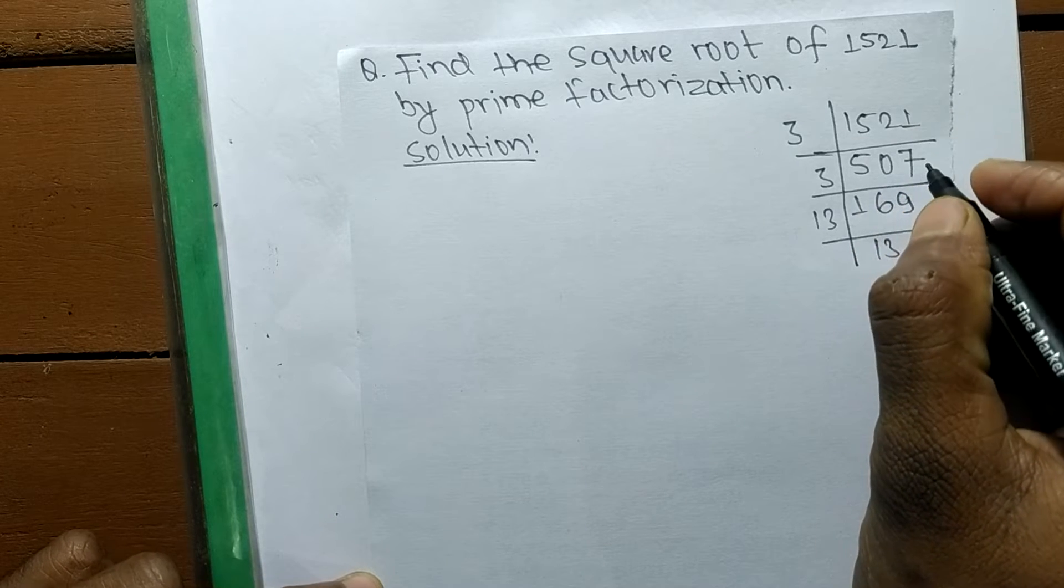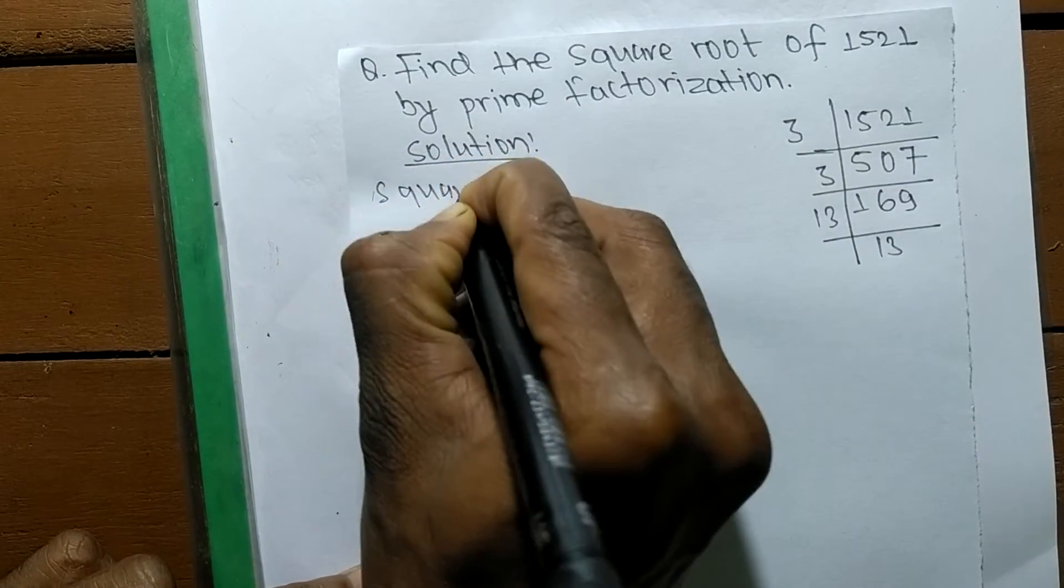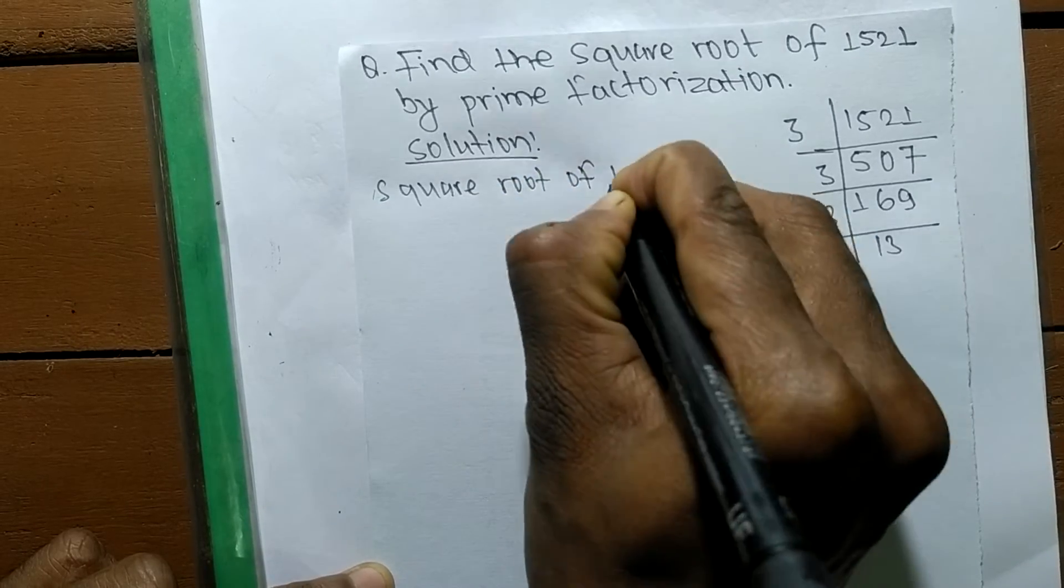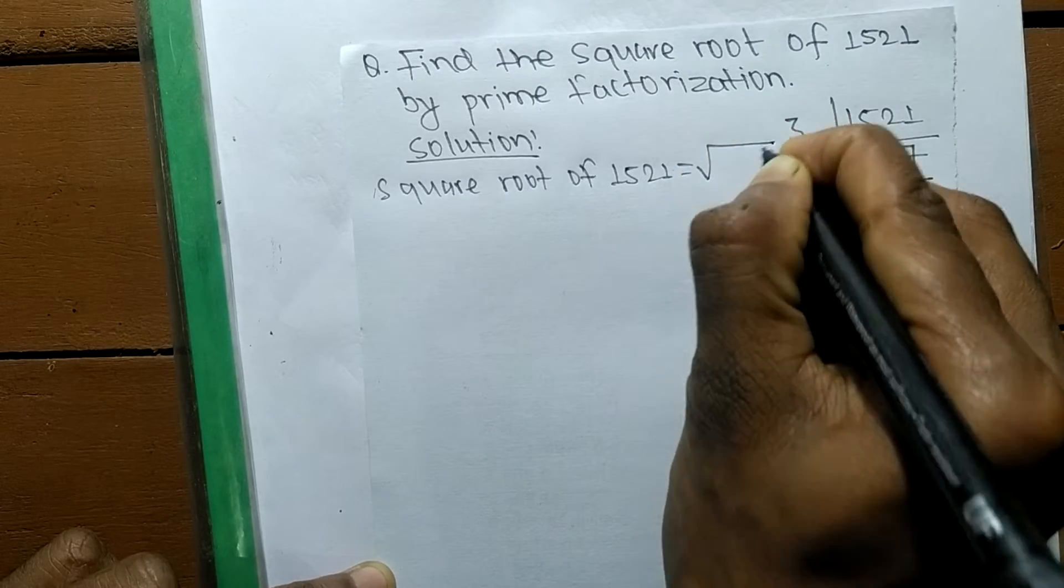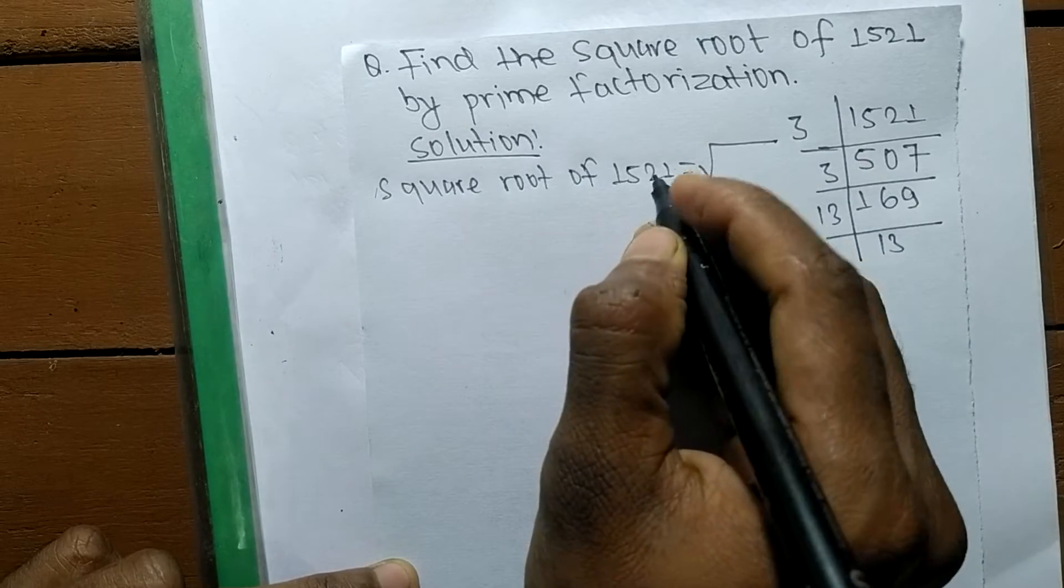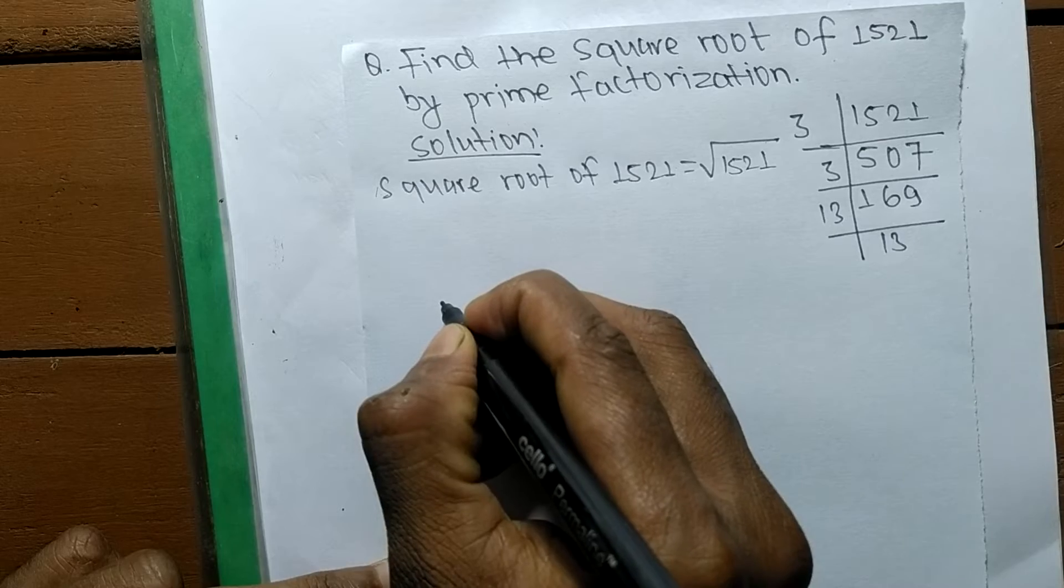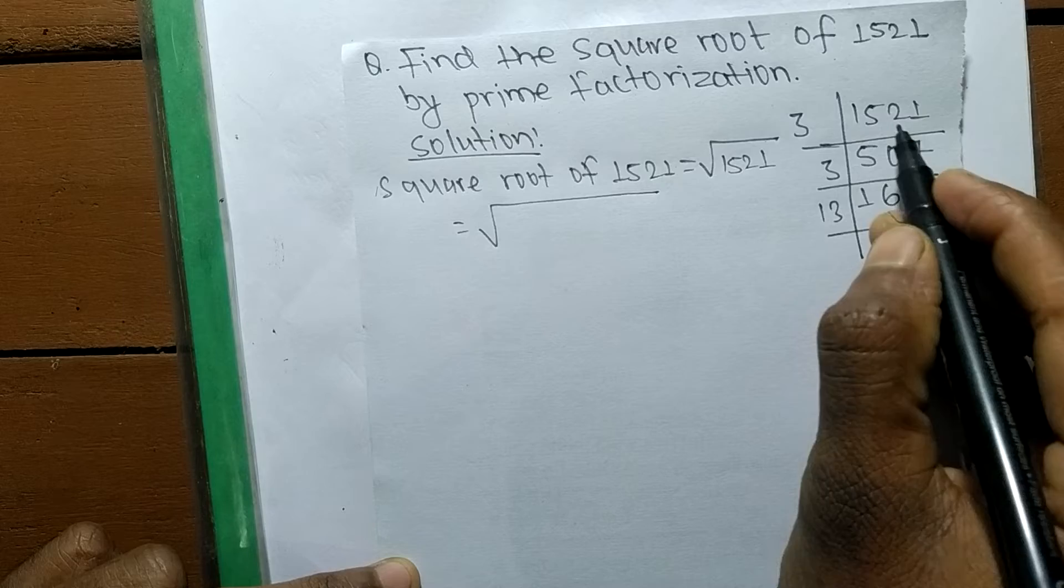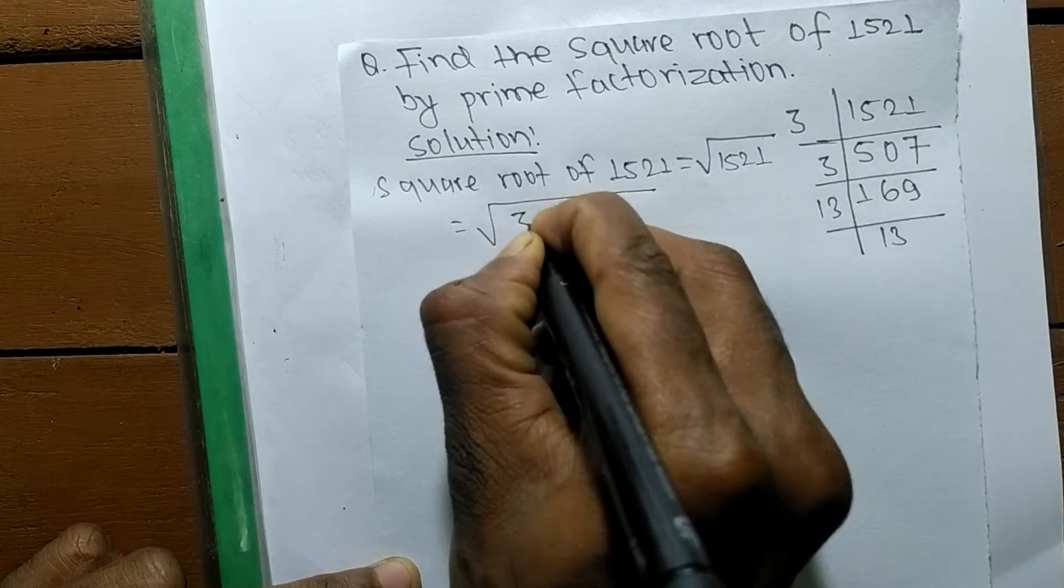But we are finding here square root, so square root of 1521 is equal to... This sign is the sign of a square root and we are finding a square root of 1521. Now we have to write all the prime factors of 1521 inside the square root, so it is 3 times 3 times 13 times 13.